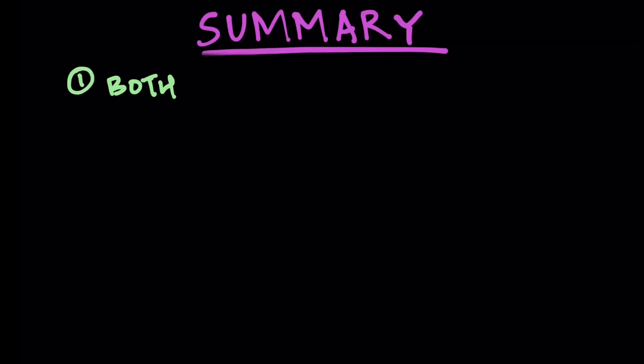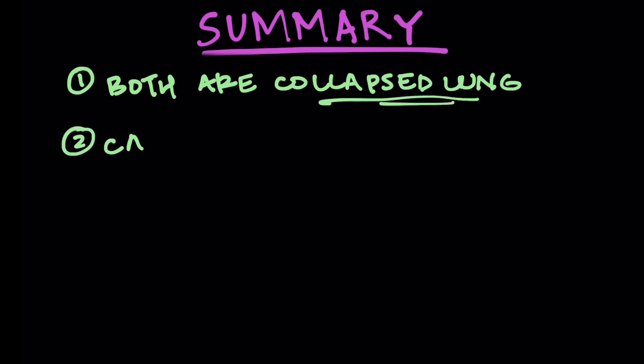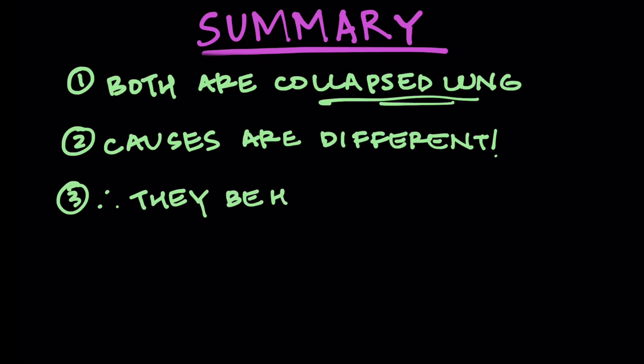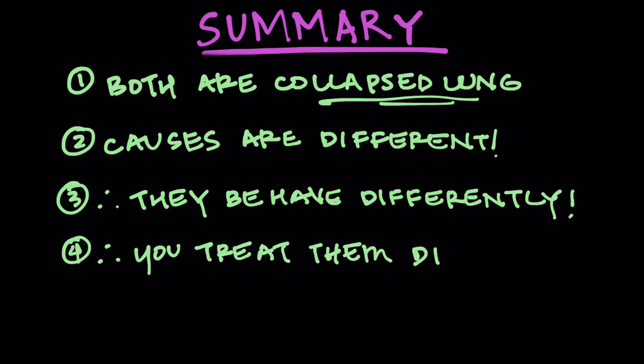Alright, so in summary, a couple quick points. One, these are both collapsed lung. That is true and important to remember. But two, the causes are different. And that is an important distinction. Three, because of this, they behave differently. So you've got to remember that. And four, because of this, then you're going to treat them differently. So that's very important to remember as well.